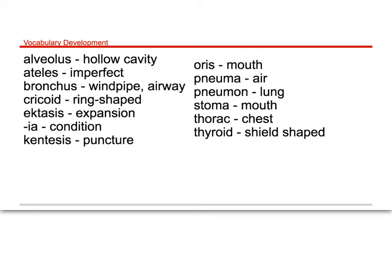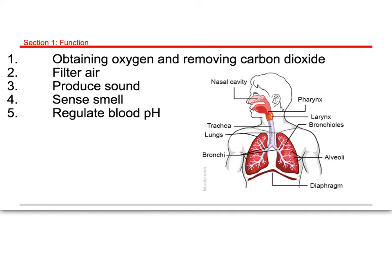What is the major function of the respiratory system? We have five. First and foremost, it's going to be to obtain oxygen out of the air and remove carbon dioxide. A lot of people think air is basically pure oxygen, but actually when you take in a breath, only about twenty percent of the air you breathe is oxygen. Seventy-eight percent is nitrogen, and about two percent is leftover carbon dioxide and other things.